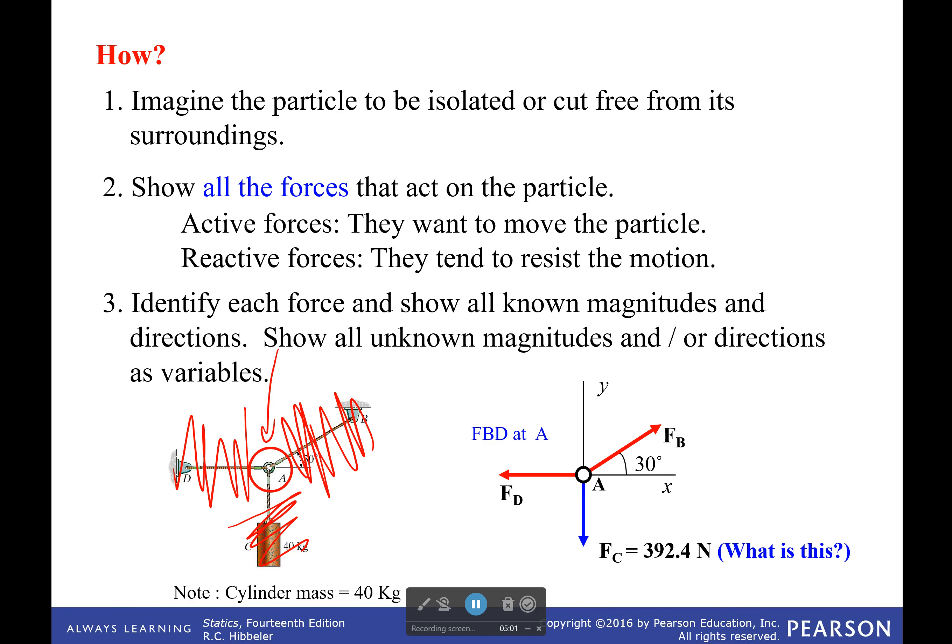So the force that's pointing towards point B is force B. The force that's pointing towards point D is force D. And the force that is caused by the weight is force C. And you see this is 392.4 Newtons here. Why is it 392.4 instead of 40? Well, remember that 40 kilograms is mass. Forces are weights. Weight is a force. So you had to convert. And we did that by taking mass times gravity. Gravity is 9.81. And that's where we got that from.